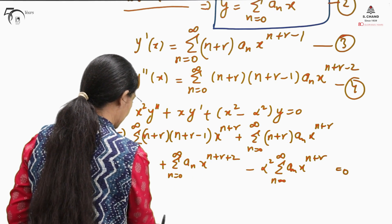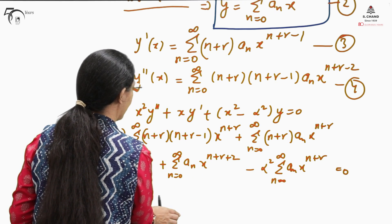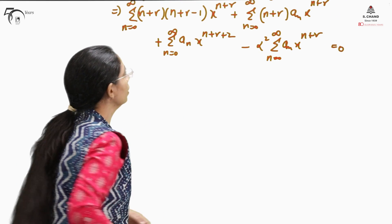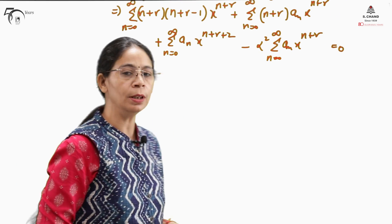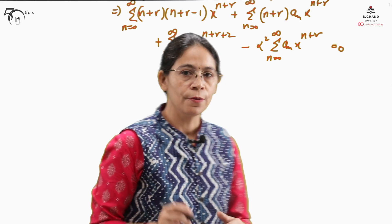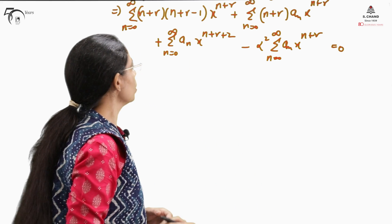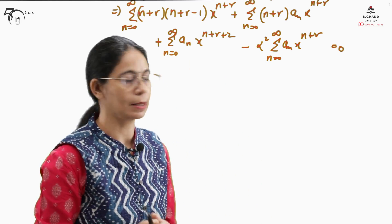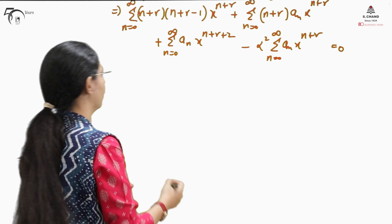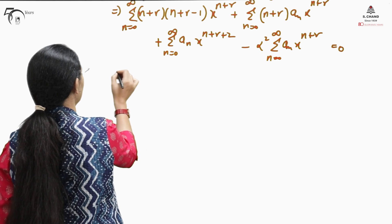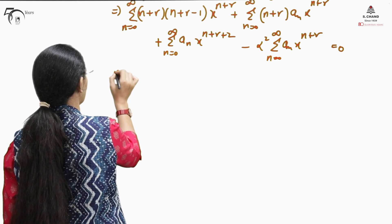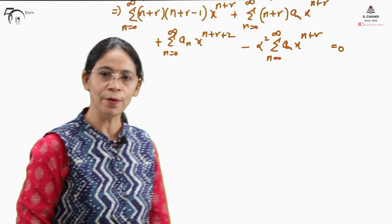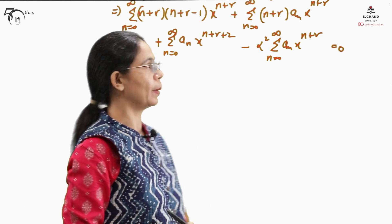The next step is to find the value of r and the coefficients. For that we need to equate the coefficients of various powers of x. We start with the lowest power of x, that is x^r, so we equate the coefficient of x^r.